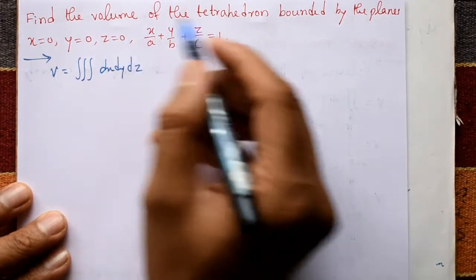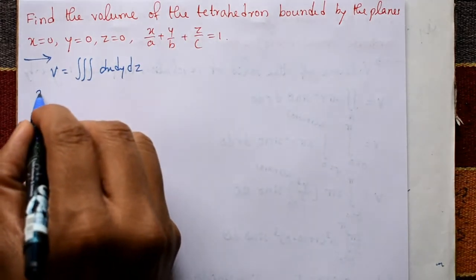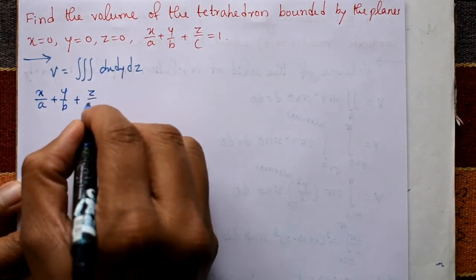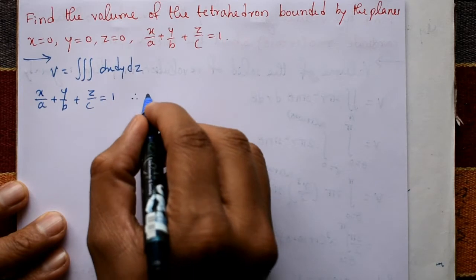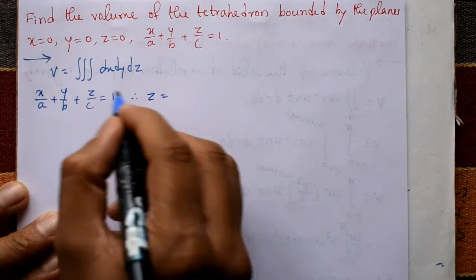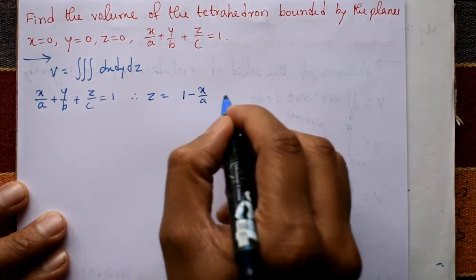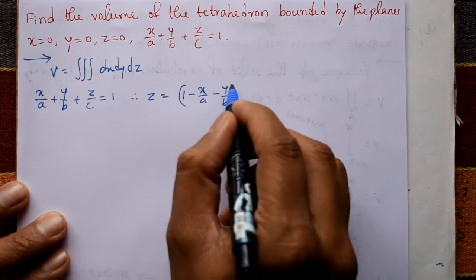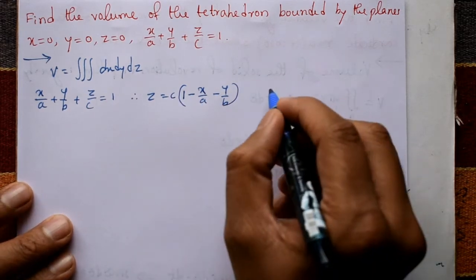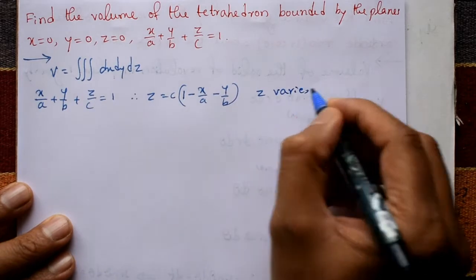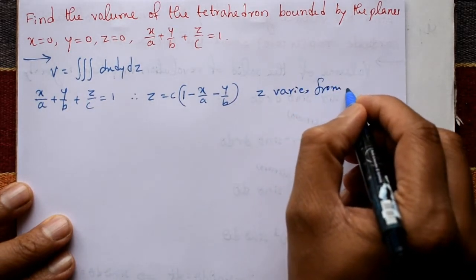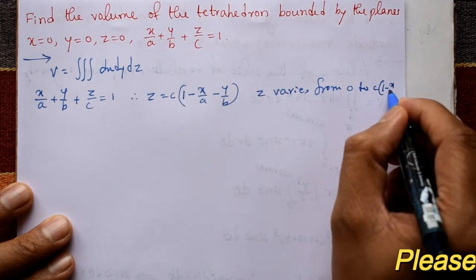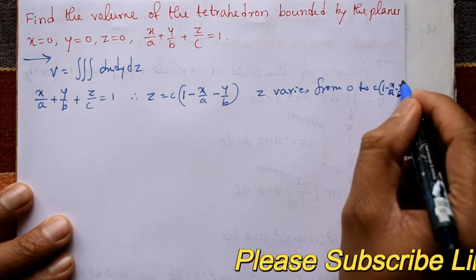For the z limits, the given equation is x/a + y/b + z/c = 1, so z = c(1 - x/a - y/b). Therefore z varies from 0 to c(1 - x/a - y/b).